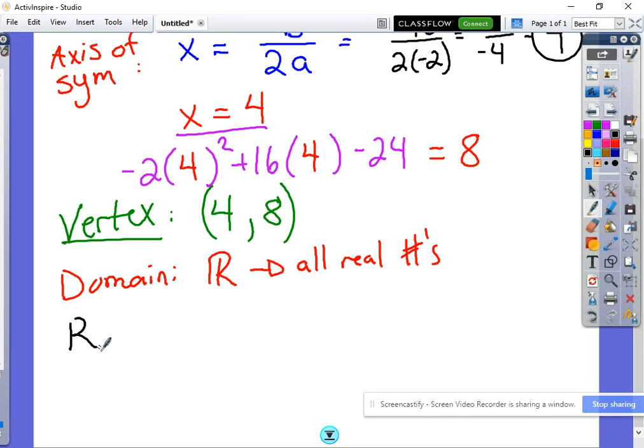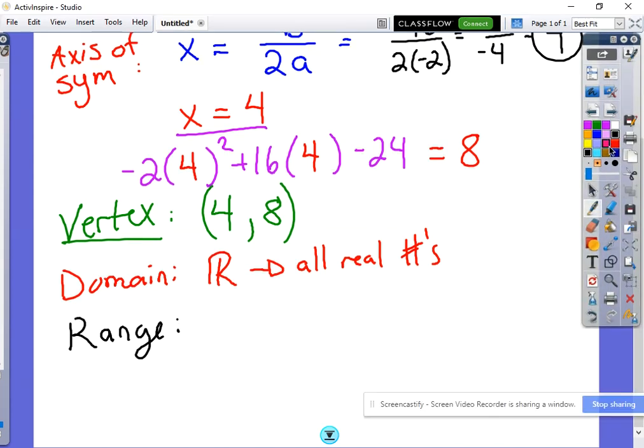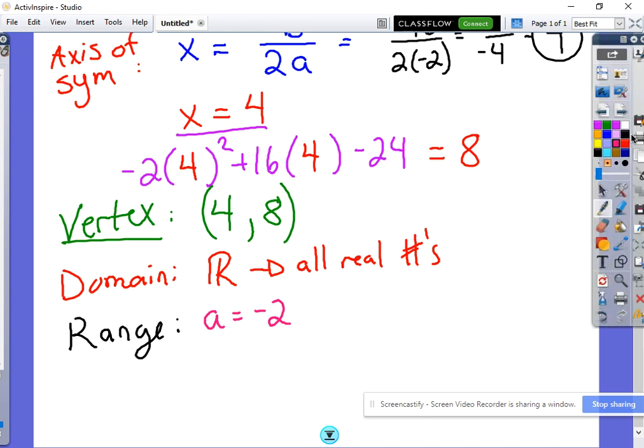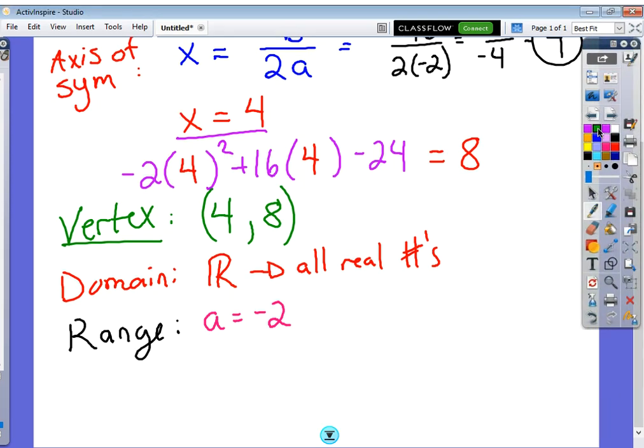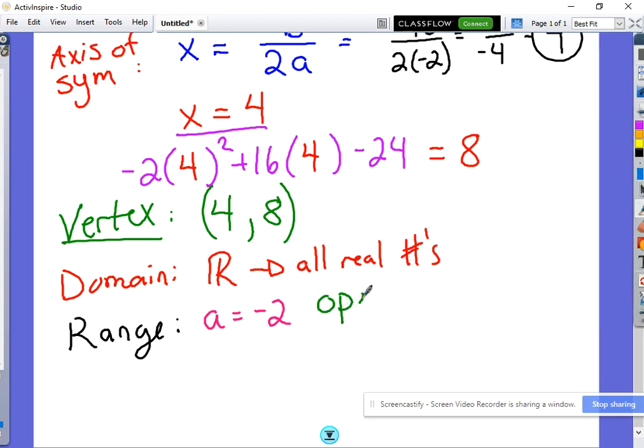Your range, that's going to depend on where your vertex is and which direction it's opening. So in this particular case, let's go back and remember that our a value is negative 2. And because our a value is negative 2, that means that our parabola is going to be opening down. It opens downward because it's negative 2.